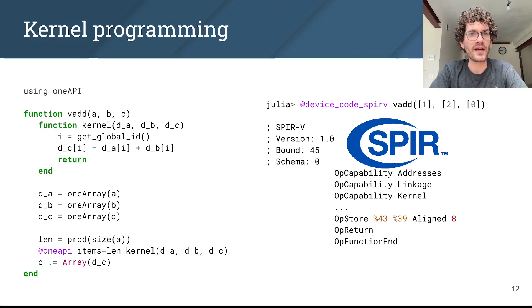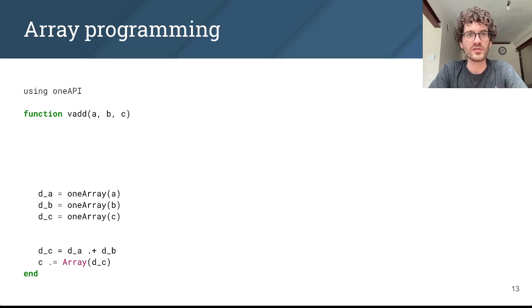Now, most users won't ever have to write a custom kernel because on top of this native kernel programming functionality, we have created a powerful array abstraction. So instead of writing your own vector addition kernel, you can just use broadcast to add two vectors together. In fact, because oneAPI.jl is built on top of GPUArrays, we already support quite a variety of array operations.